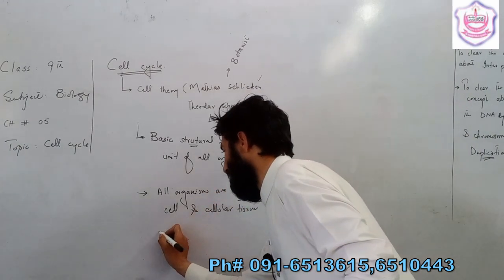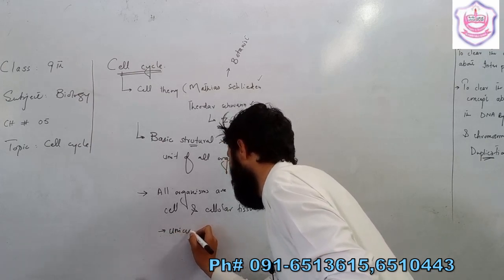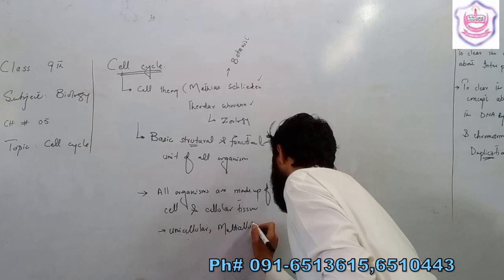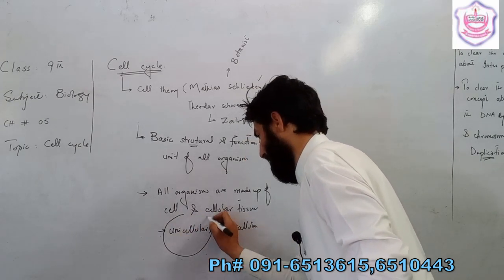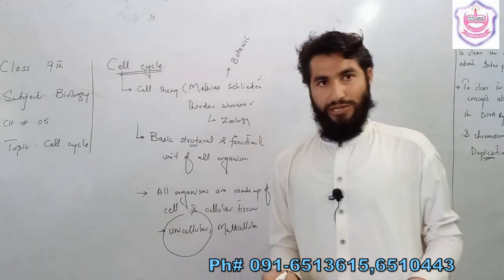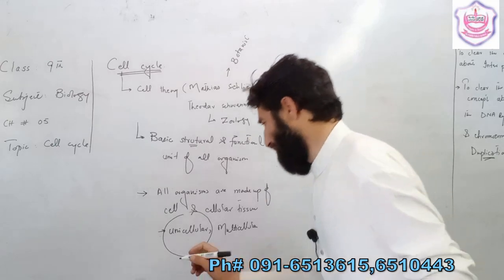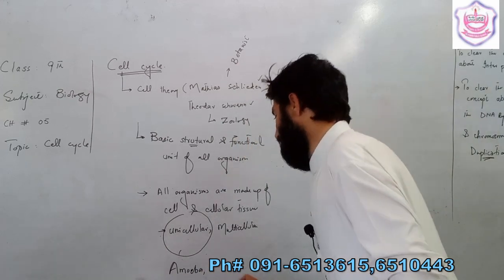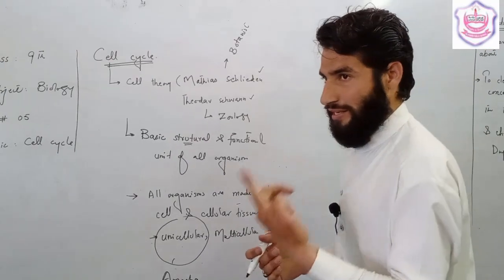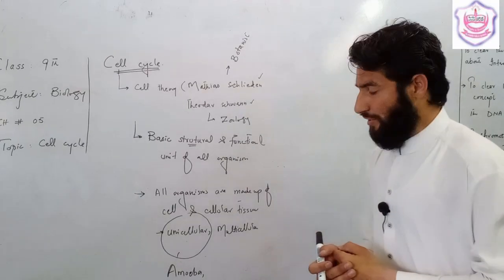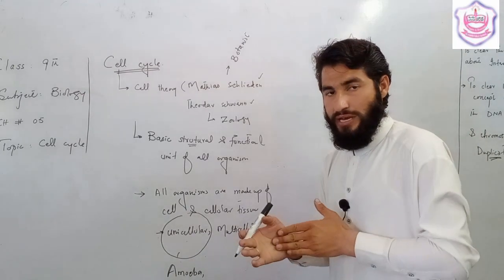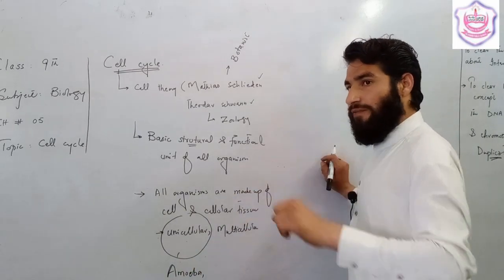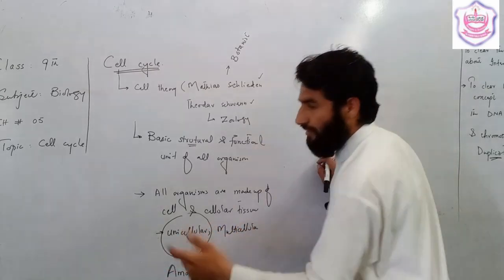An organism can be unicellular or multicellular. A unicellular organism, for example Amoeba, uses a single cell to carry out all life activities.